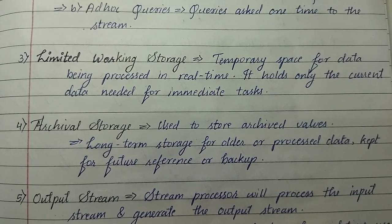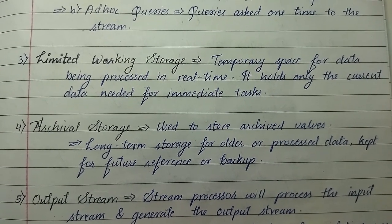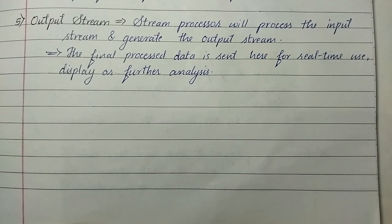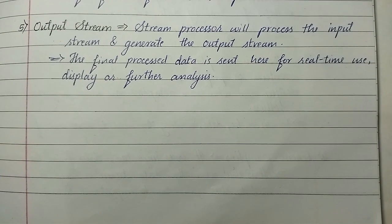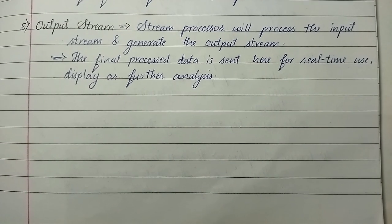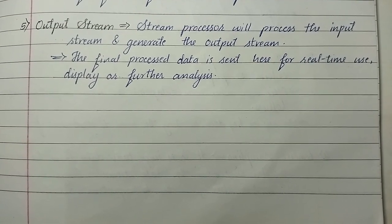And the fifth one is output stream. Stream processors will process the input stream and generate the output stream, and the final processed data is sent here for real-time use and display or further analysis.